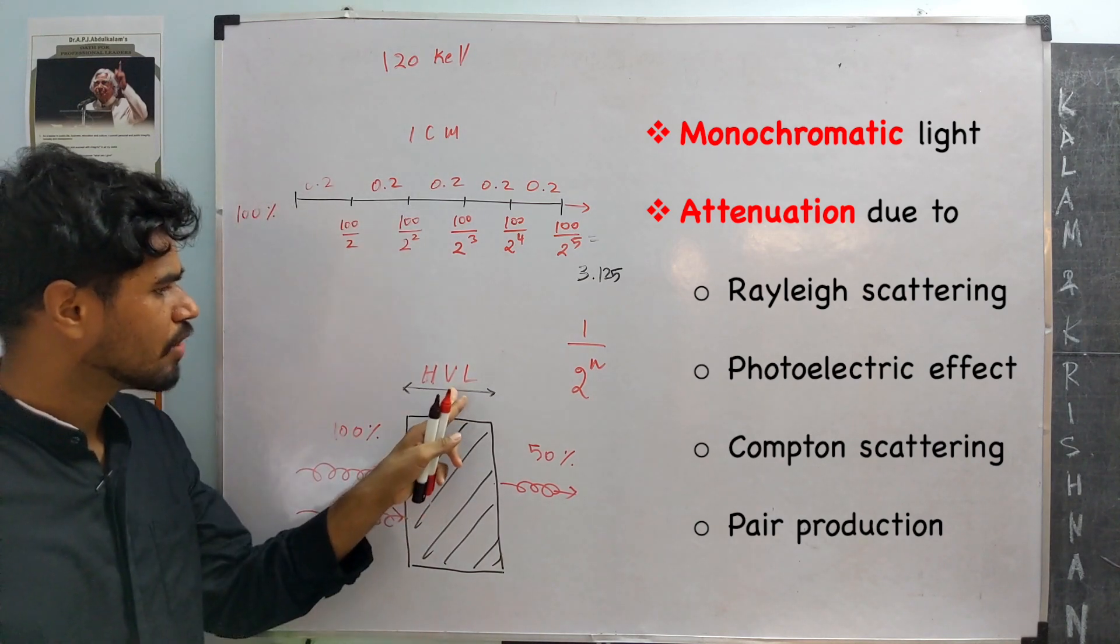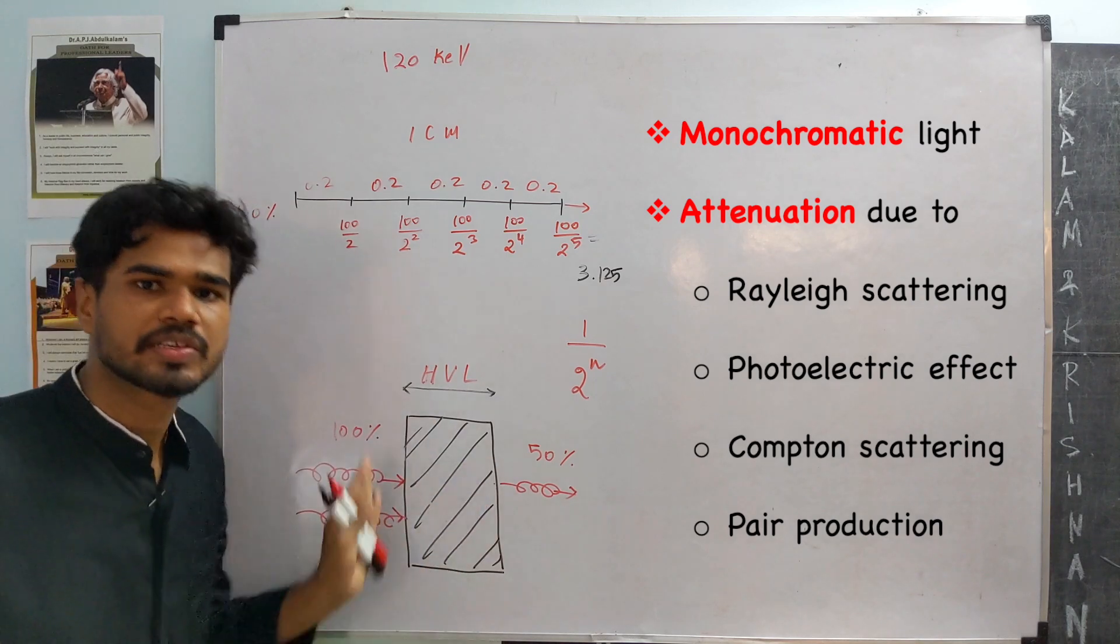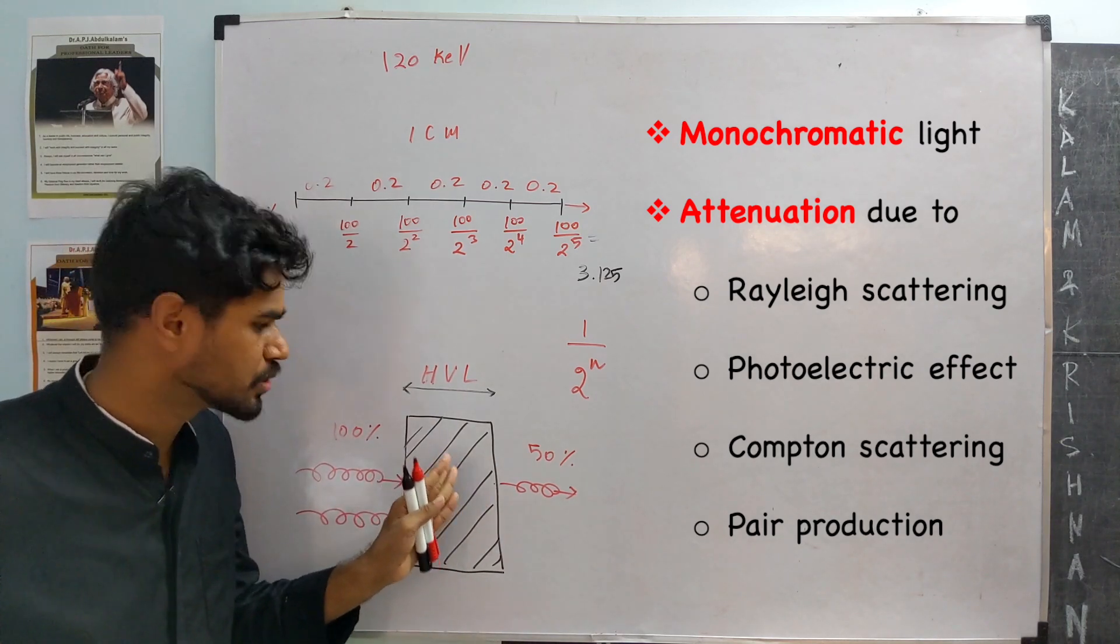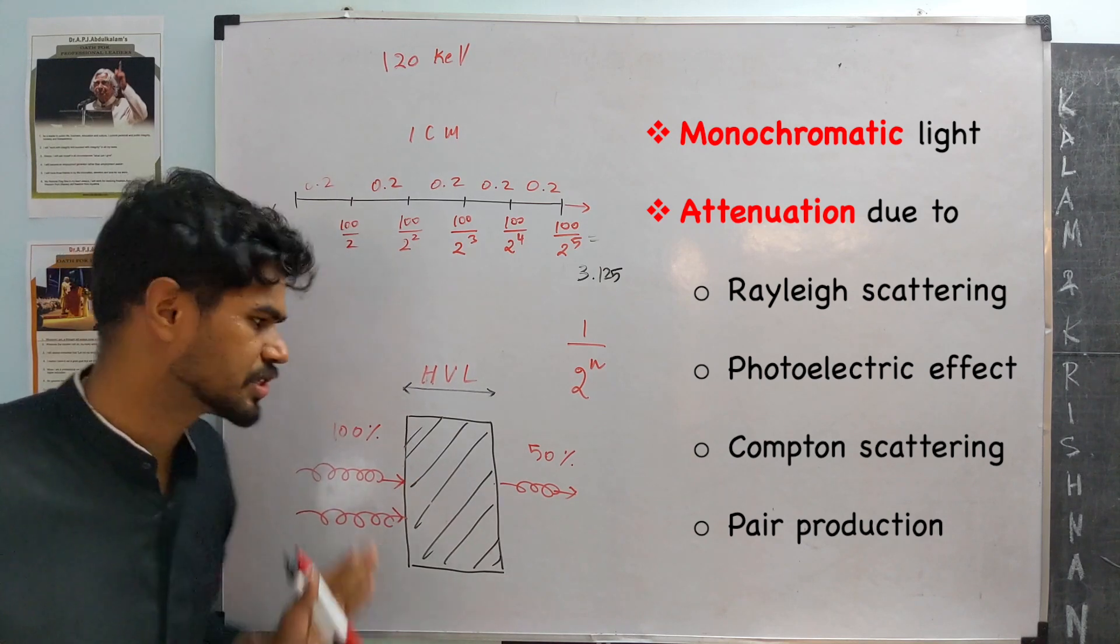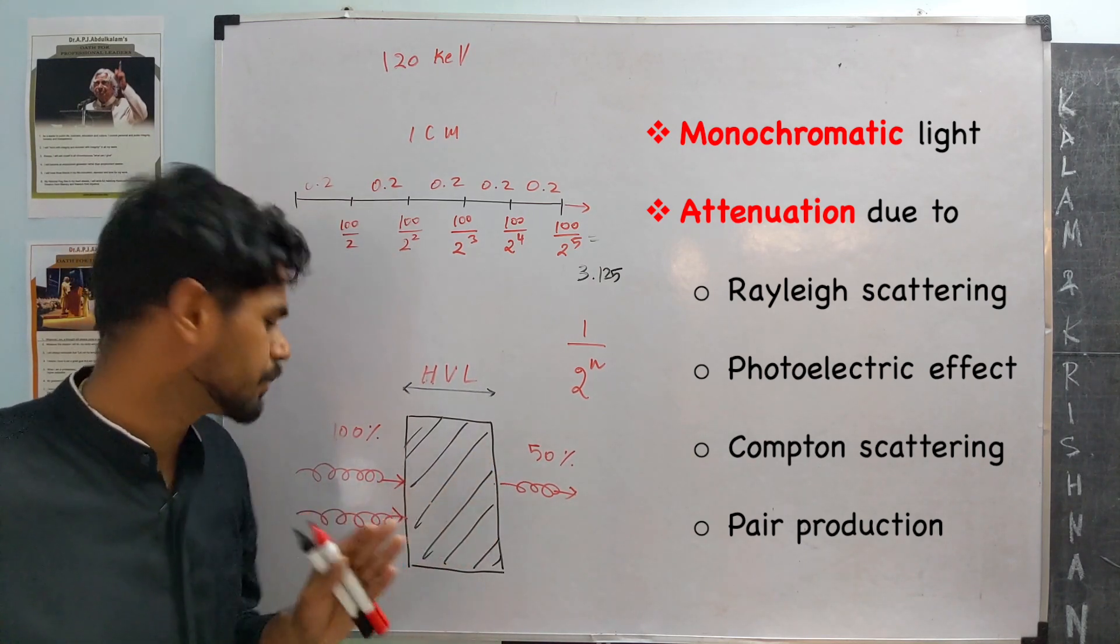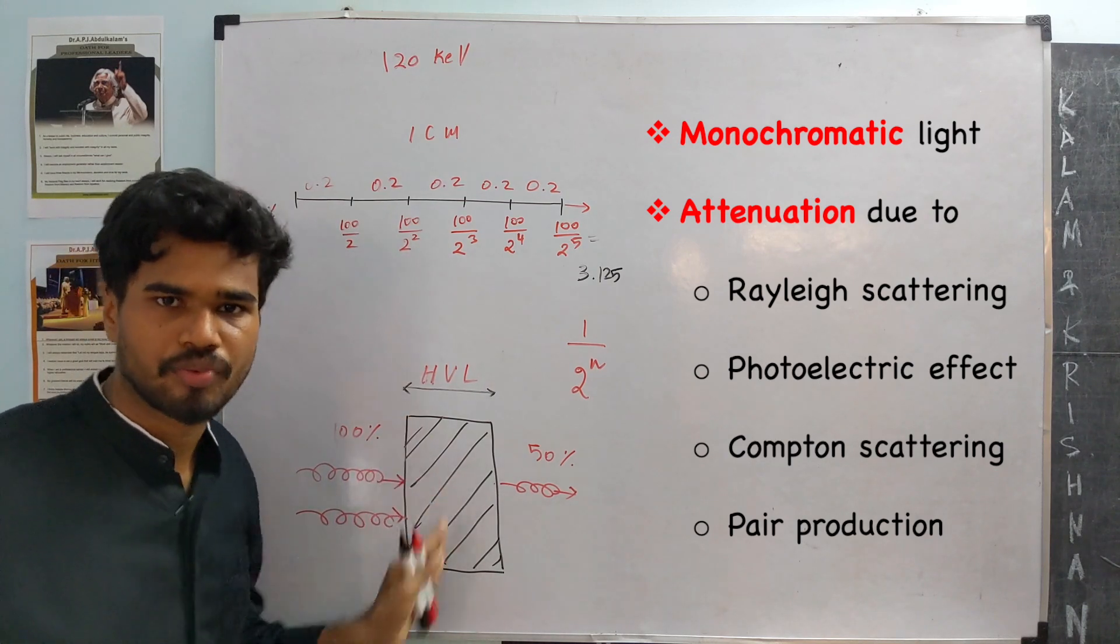So, this half-value layer is a combination of all these effects. The effect of attenuation of all these are considered in the given half-value layer. It is not just purely due to photoelectric effect or purely due to Compton scattering. It is a combination of all four.